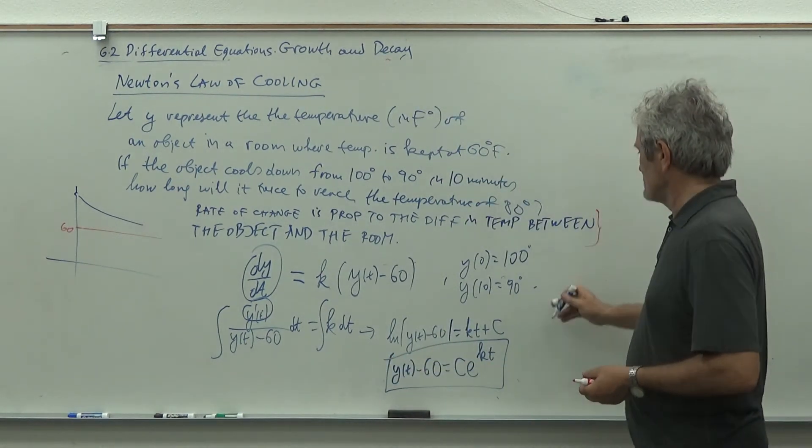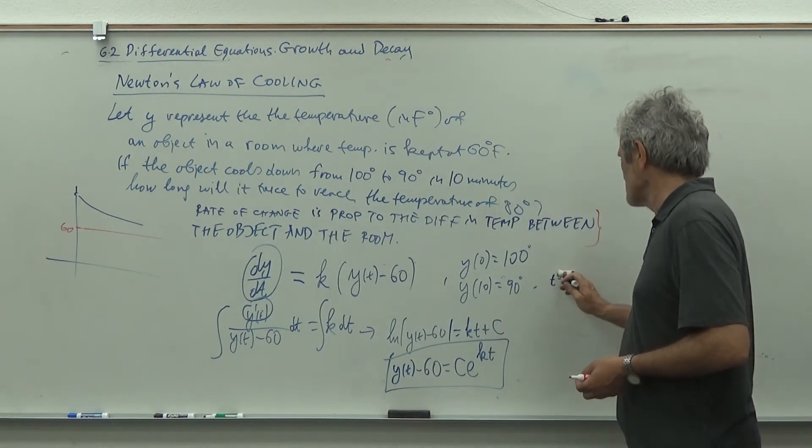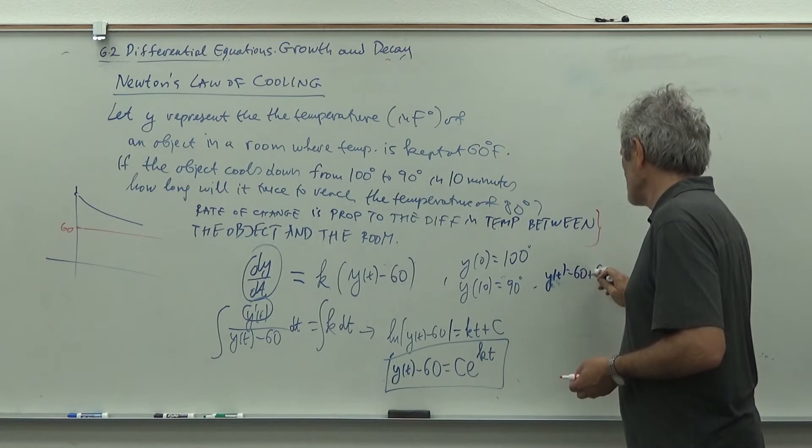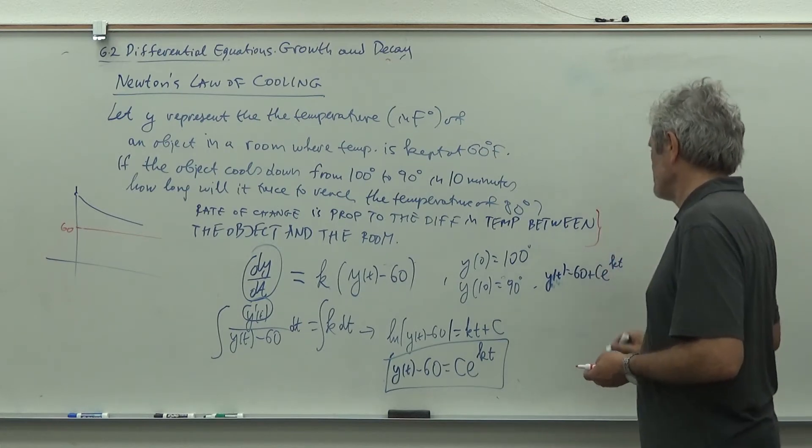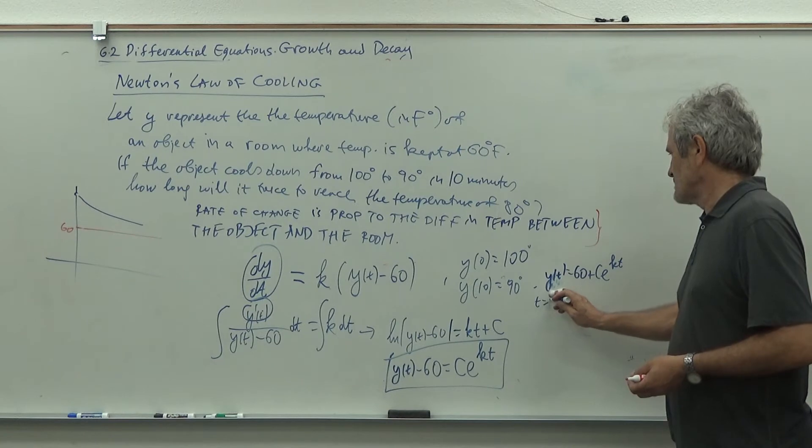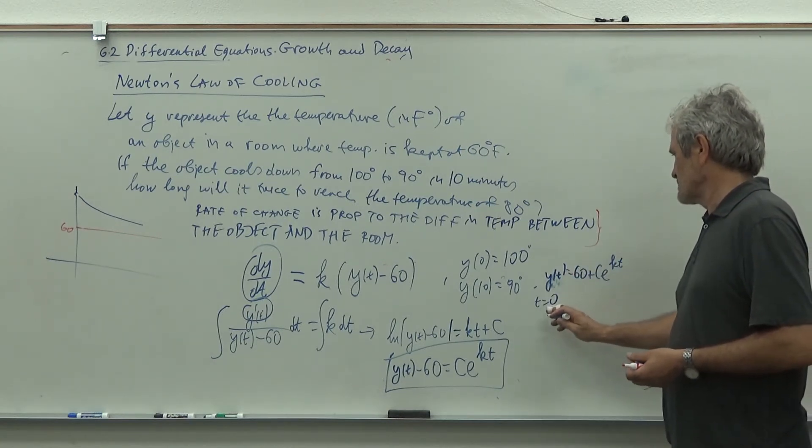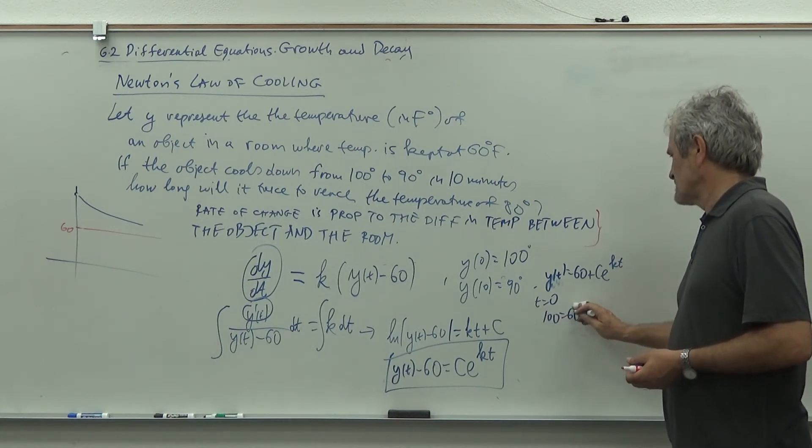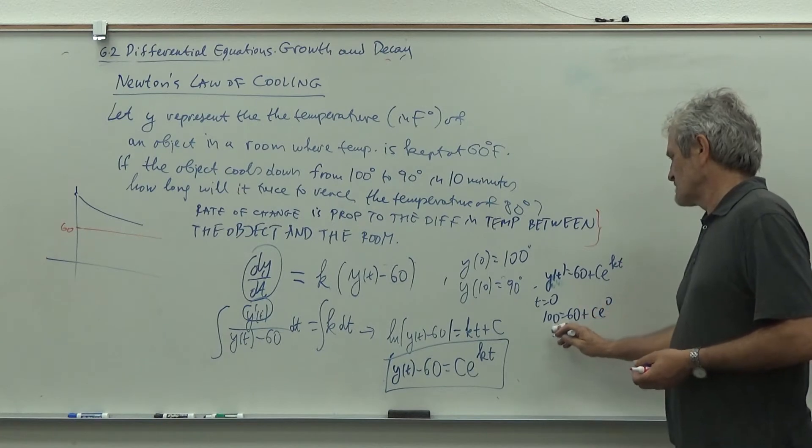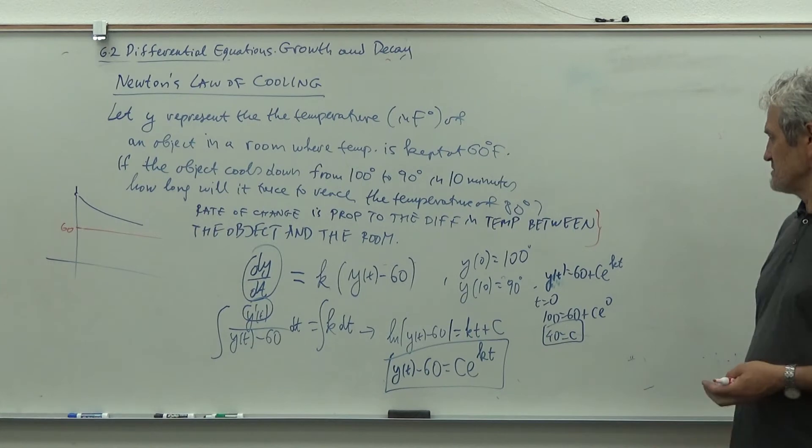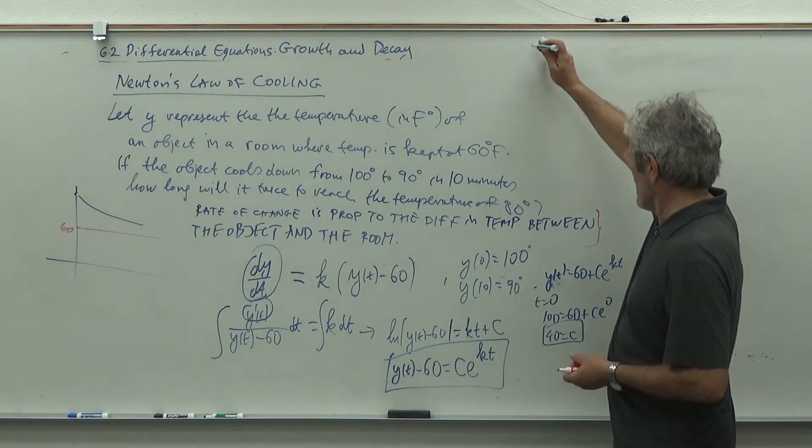So y of t equals 60 plus C e to the kt. When we plug in T equals zero, we get the initial temperature: 100 equals 60 plus C e to the zero, so from here we get 40 equals C. So we got C, we got starting temperature. And next one will tell us k.